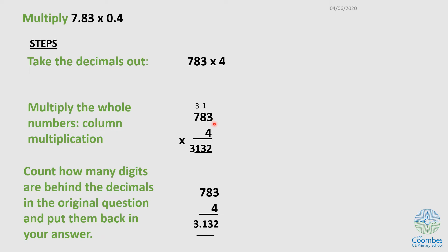If I do my multiplication using previous knowledge, I should have 3,132. Now the third part says count the number of digits that are behind the decimal in the original question and put them back.